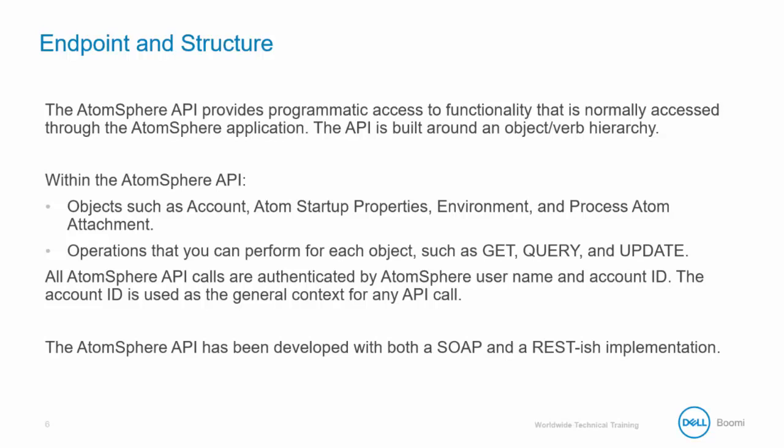All AtomSphere API calls are authenticated by AtomSphere username and account ID. The account ID is used as the general context for any API call. The AtomSphere API has been developed with both a SOAP and a REST-ish implementation.